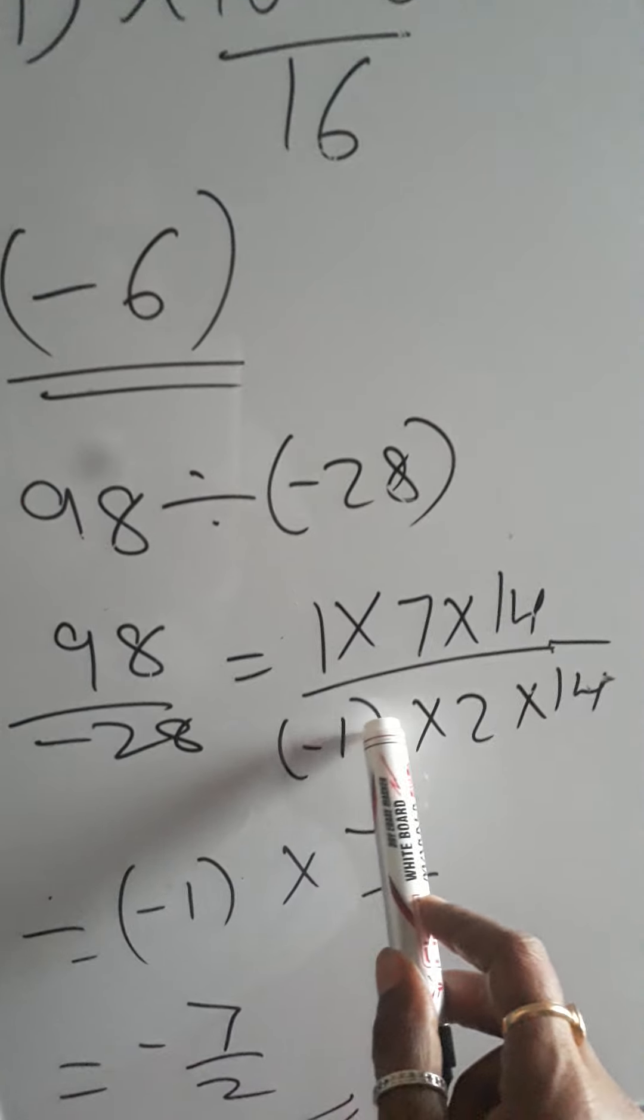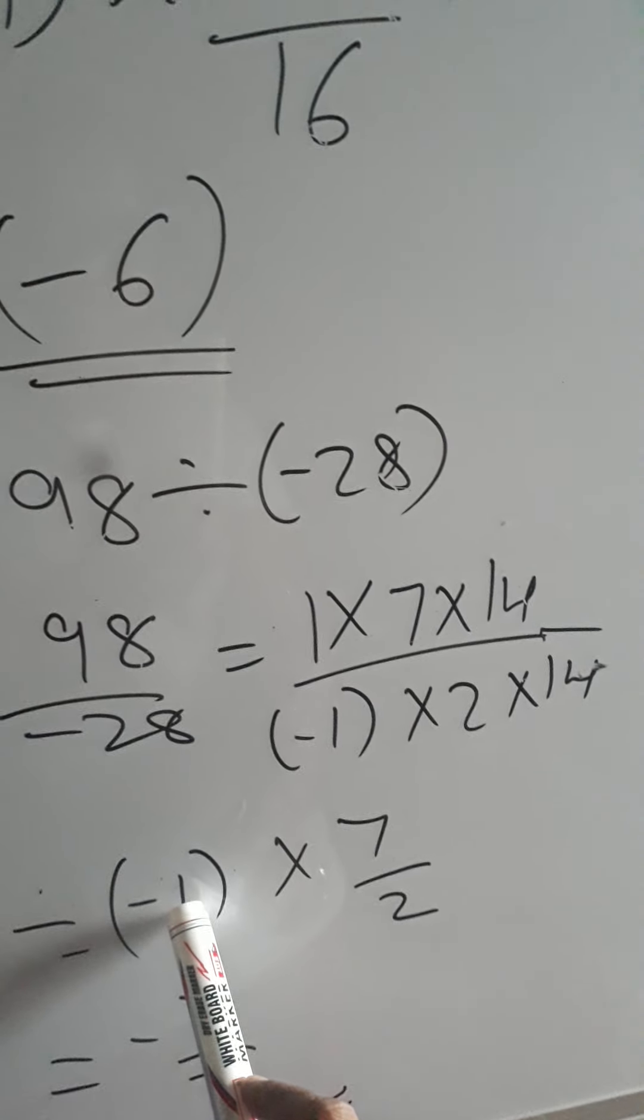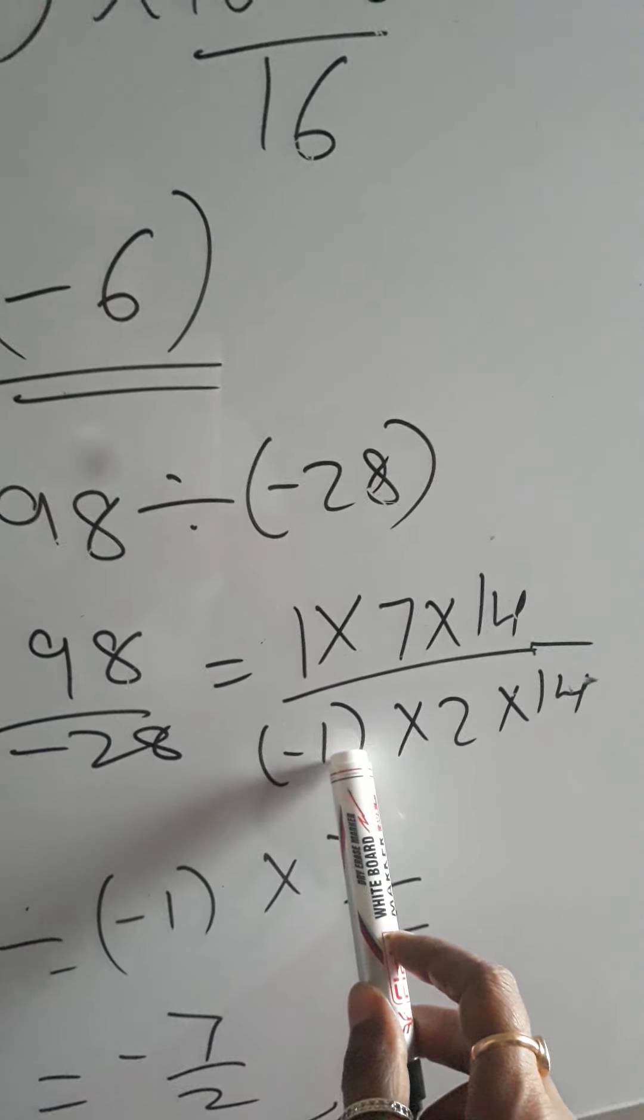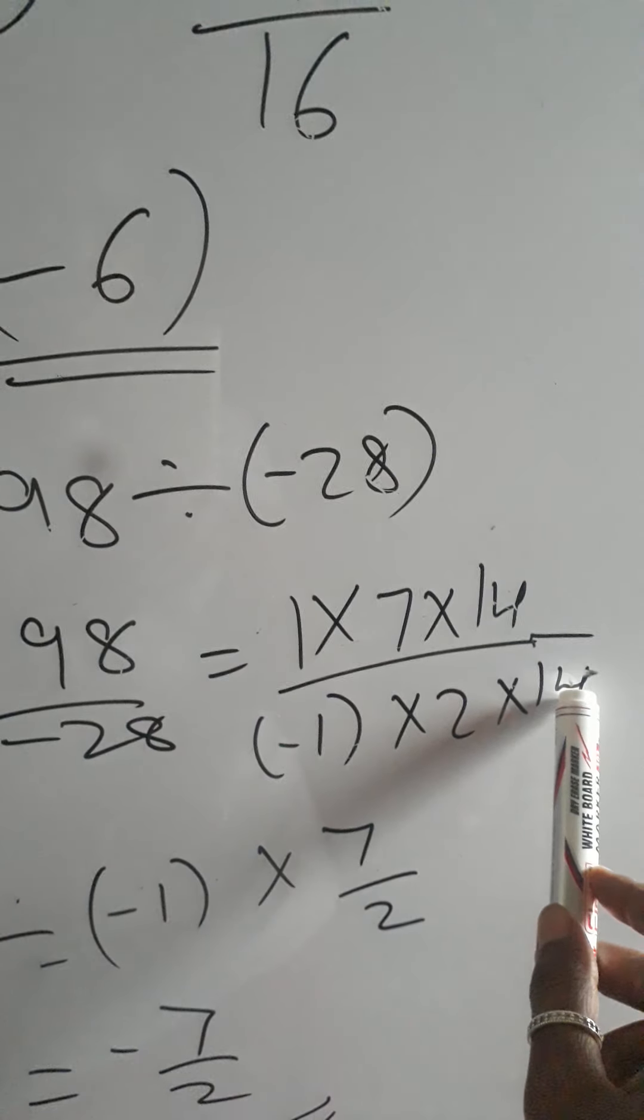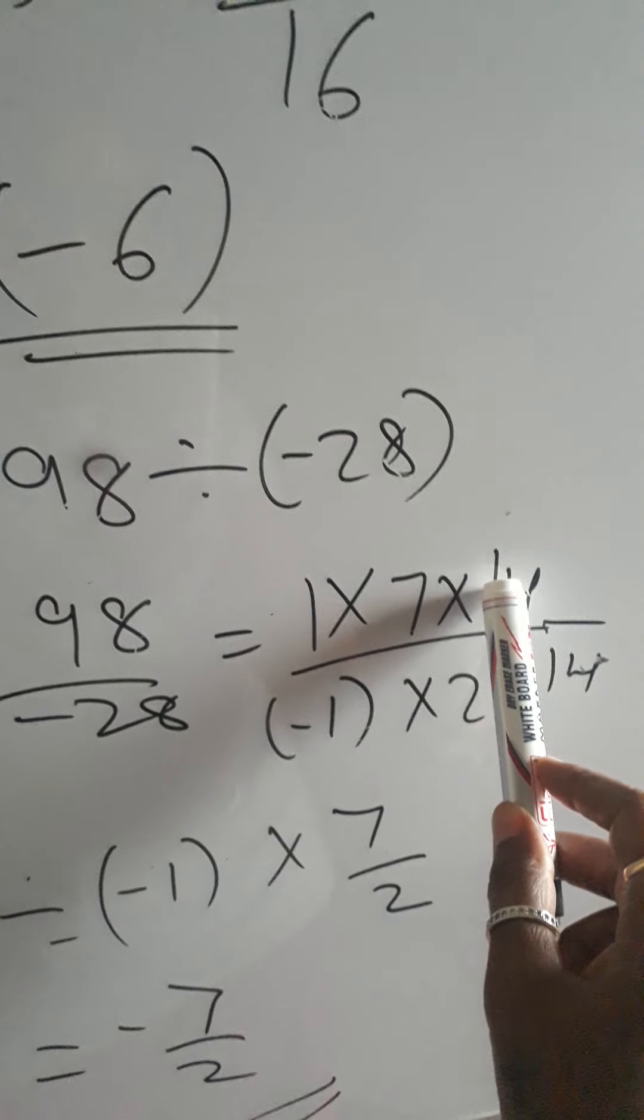Then we separate that part, that is minus 1 stands out, and look at it: 14 and 14 will get cancelled. 14 ones are 14.